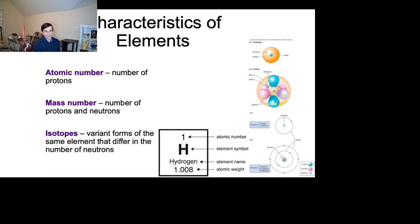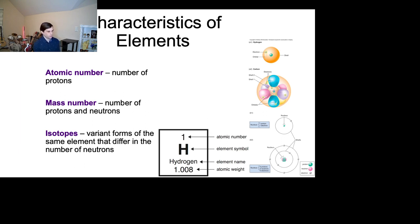You could have 9 million neutrons, 18 gajillion electrons, but you're still going to be hydrogen. You could have no neutrons, no electrons, one proton — and you're still going to be hydrogen. That's just how that works. It's kind of like humans: if you have 46 chromosomes, you could have red hair, brown hair, blonde hair, no hair — you're still going to be a human. The chromosomes on the inside determine what kind of species you are, and that's the same way an atom works with its proton number.